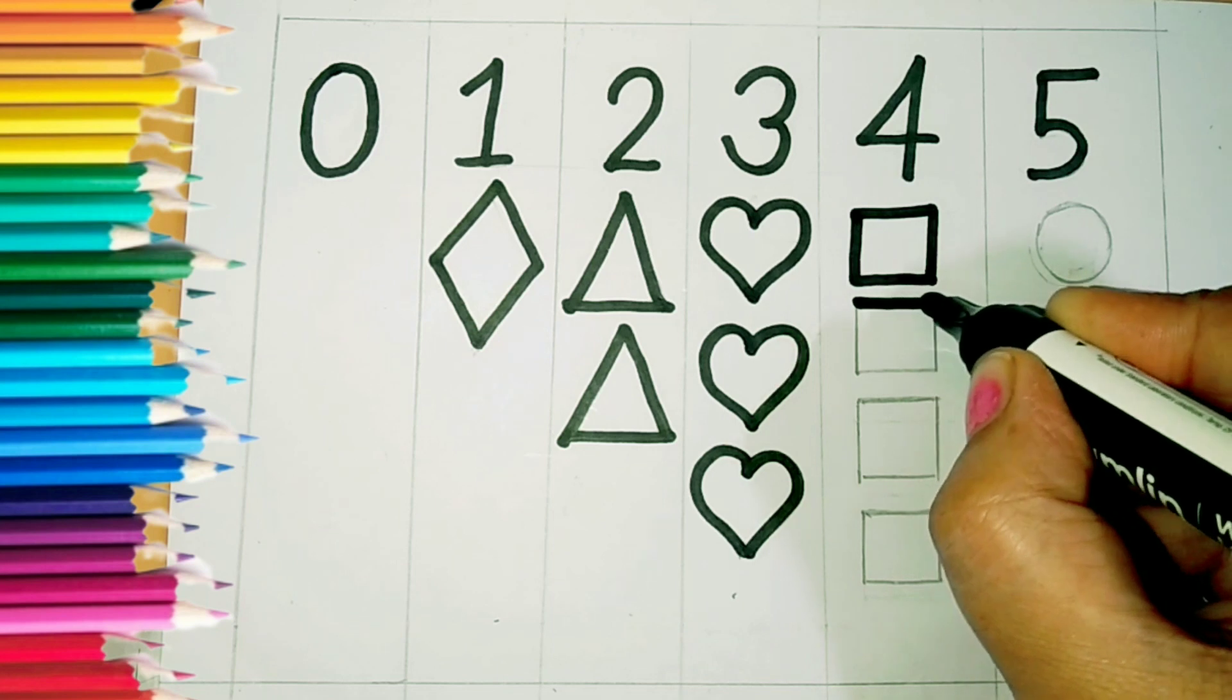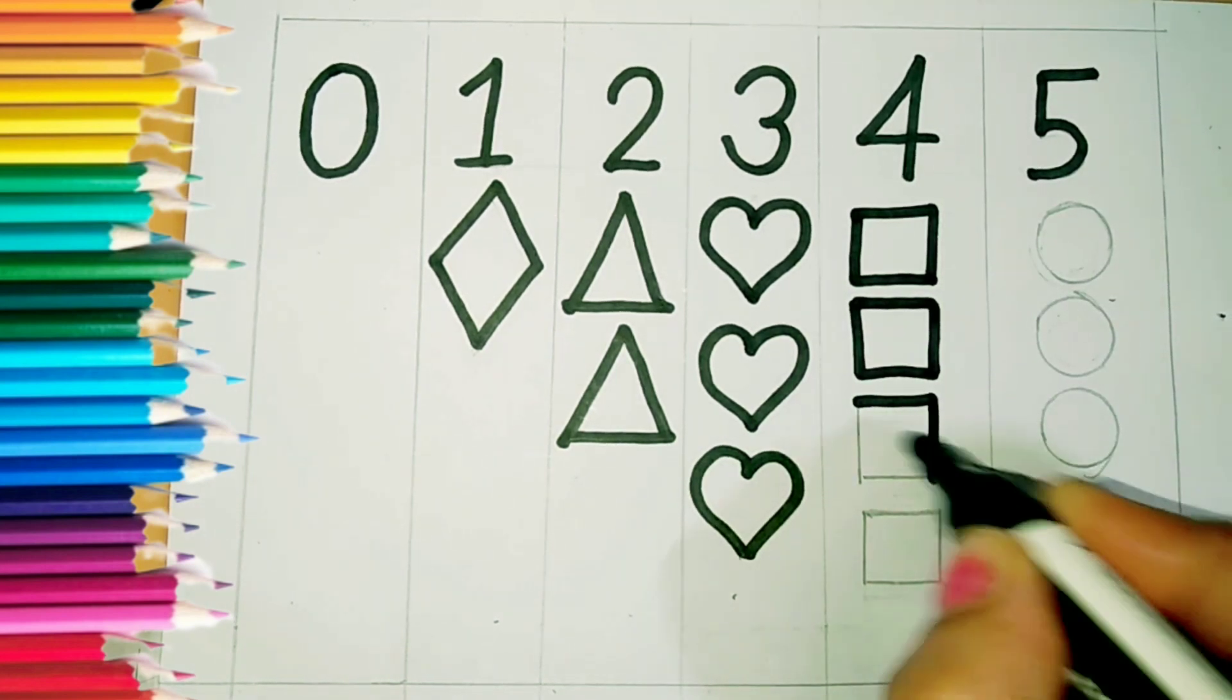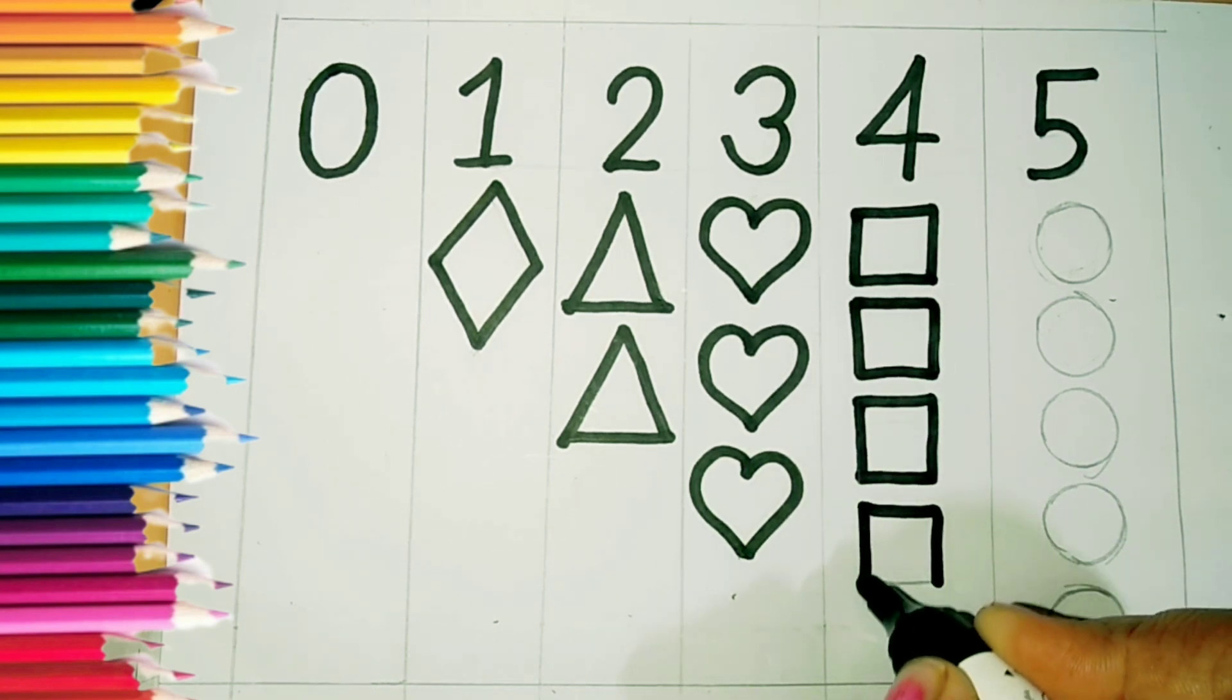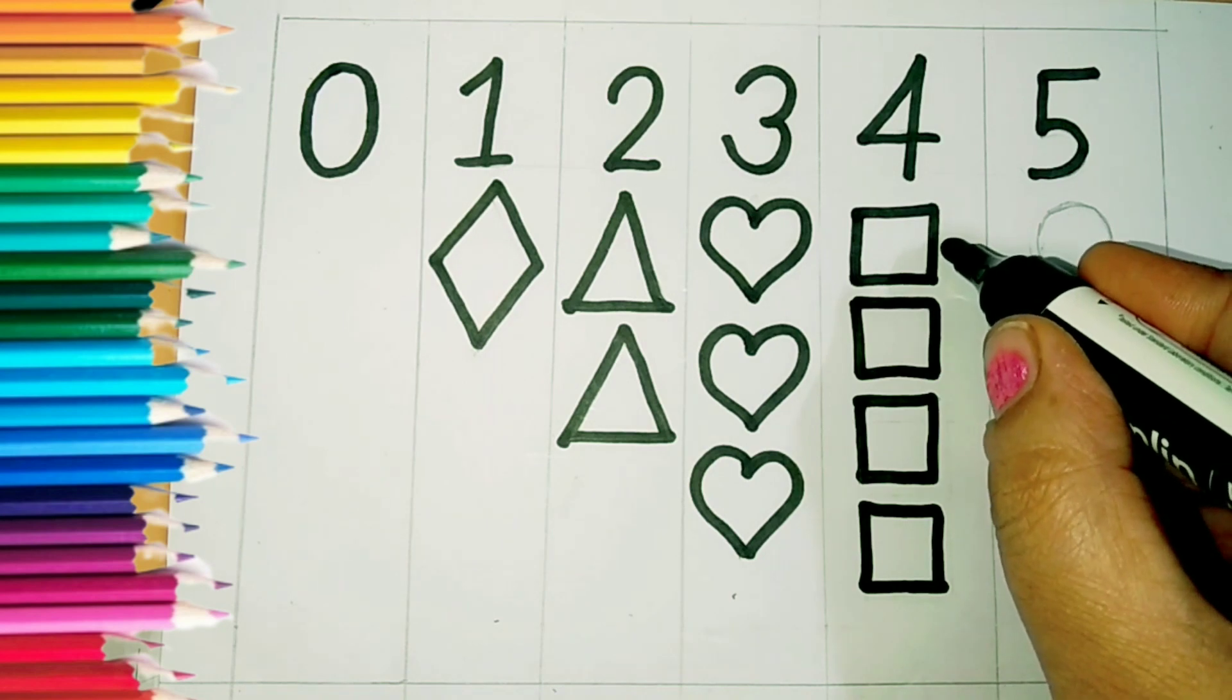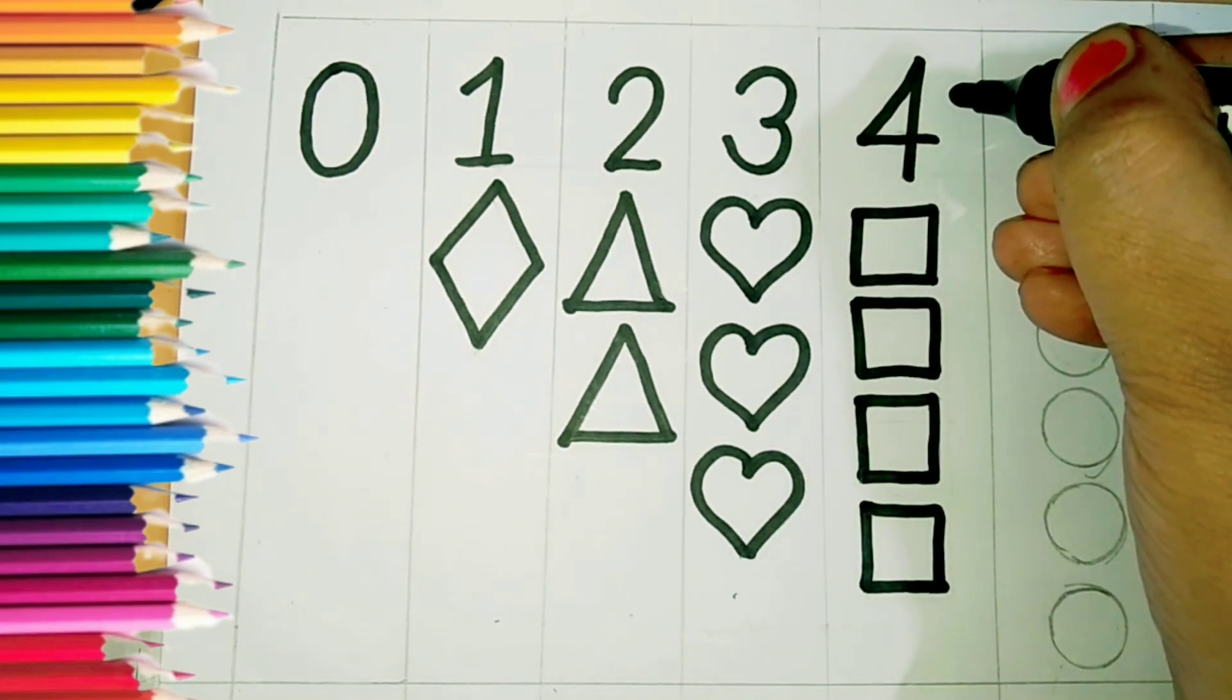This is a square. This shape is square. One, two, three, four. This is a four.